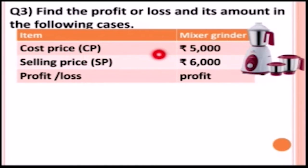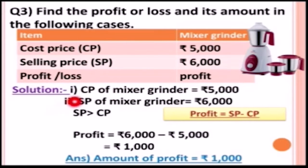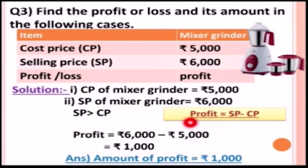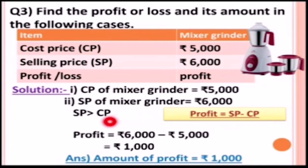The cost price of the mixer grinder is rupees five thousand and the selling price is rupees six thousand. We can clearly see that the selling price is greater than the cost price, so there is profit. Profit equals SP minus CP, so six thousand minus five thousand equals one thousand. The amount of profit is rupees one thousand.